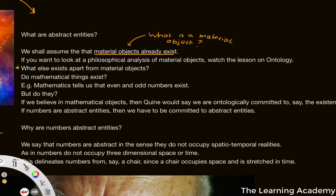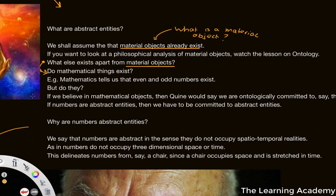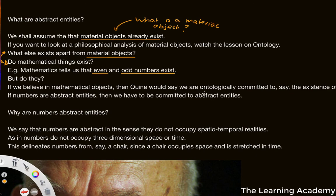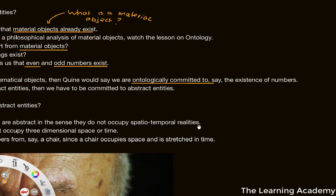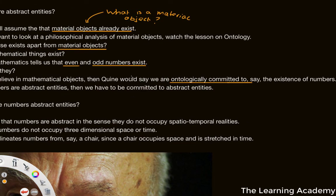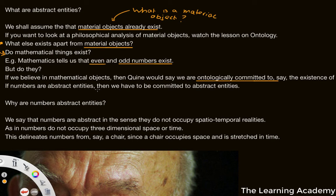One question then is: what exists apart from material objects — objects that exist in the real world? One example of the kind of questions we might be asking is: do mathematical things exist? Mathematics tells us that odd numbers and even numbers exist, that there are such things as even and odd numbers. But can we actually be ontologically committed to mathematical entities such as even numbers and odd numbers? If we believe in mathematical objects, then Quine would say we are ontologically committed to the existence of numbers — odd numbers, prime numbers, complex numbers, for example.